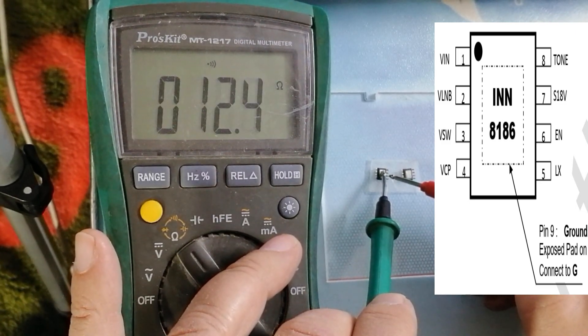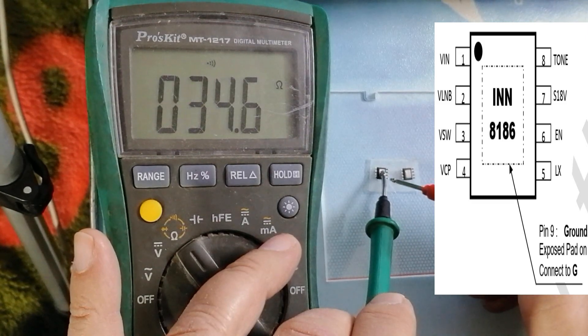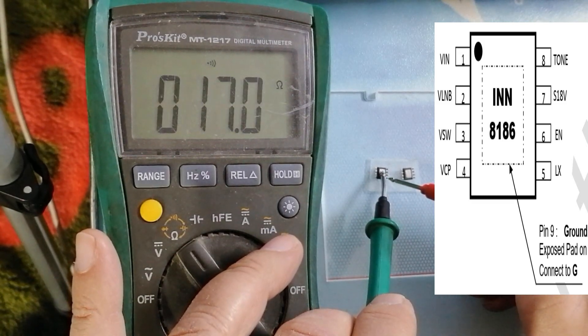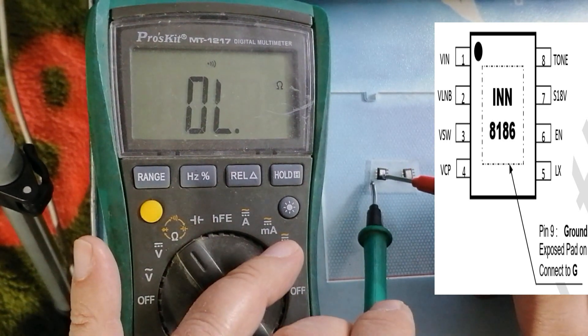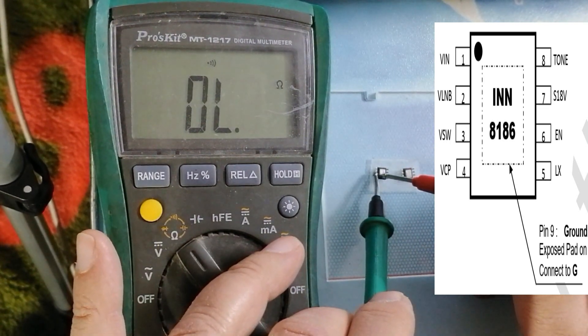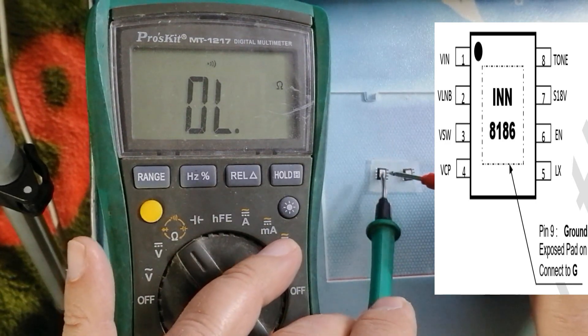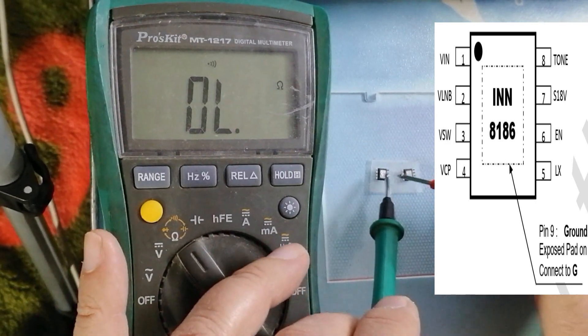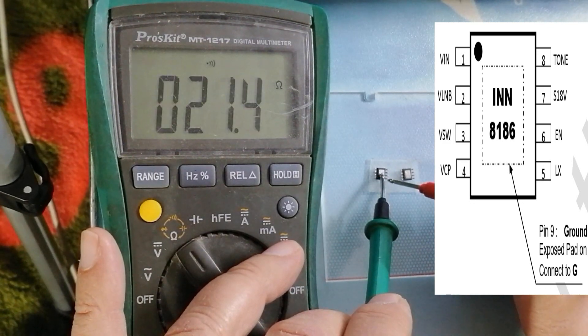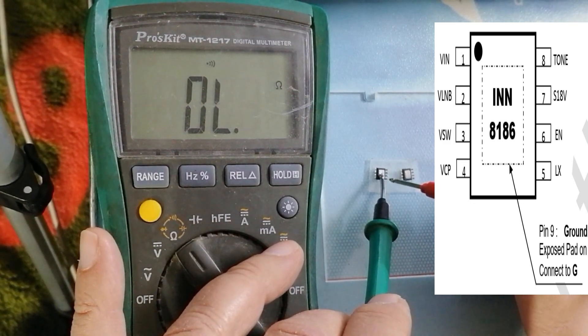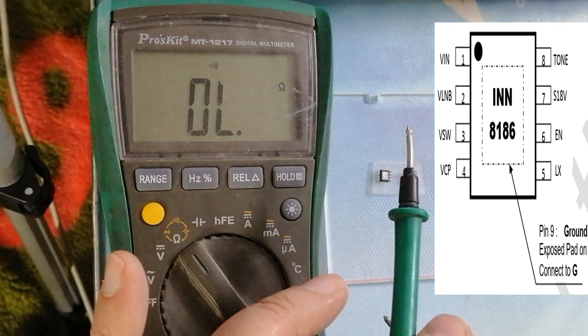Pin number 4 also short. Pin number 5, no. Six, eight, nine. Now pin number 4 is VCP, gives voltage about 15 volts.